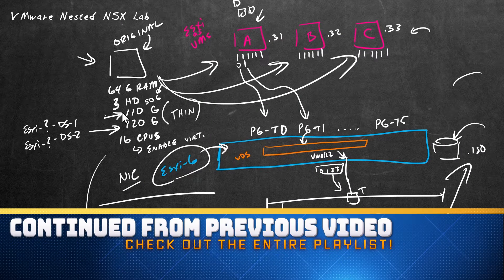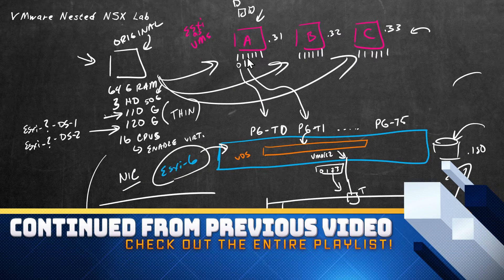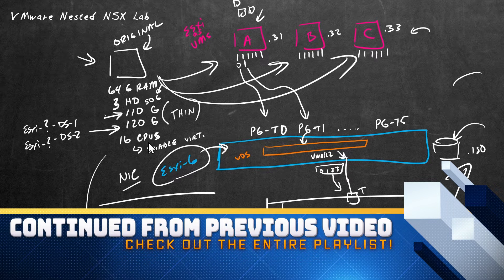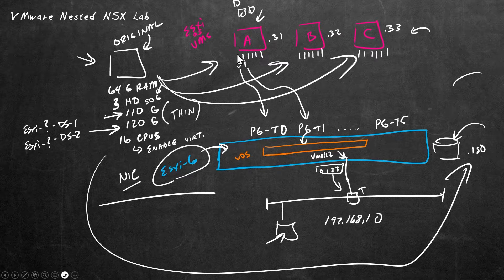Let's do a spot check. We have deployed these three VMs with their appropriate network interface cards, disks, and CPUs, and we've enabled virtualization. So next, let's do the install of ESXi on ESXi A, B, and C.